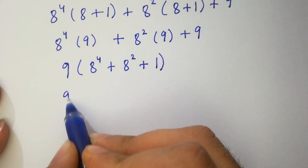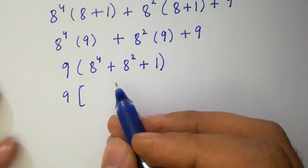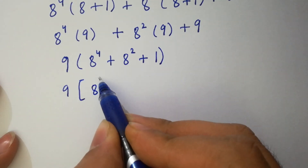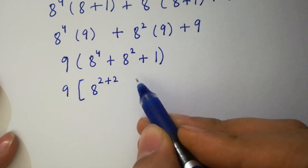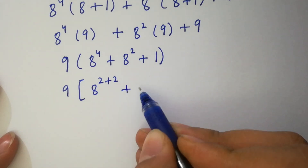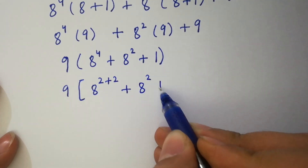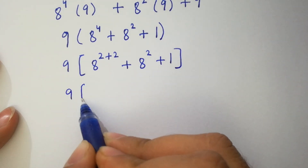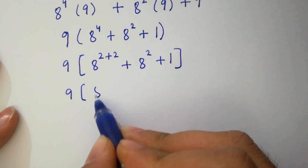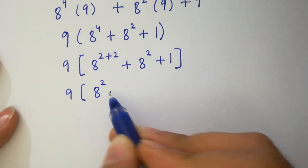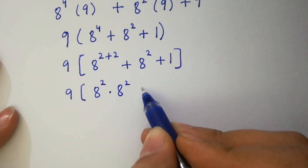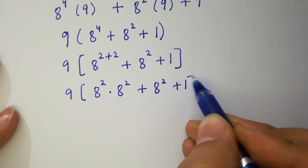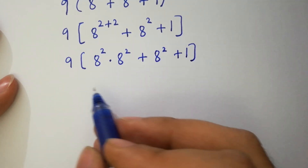Here, 8 to the power 4 is the same as 8 to the power 2 plus 2, and since 2 plus 2 is 4, we have 8 to the power 4 plus 8 squared plus 1, which equals 9. Then 8 to the power 2 plus 2 becomes 8 to the power 2 times 8 to the power 2, plus 8 squared, plus 1, which gives 9.